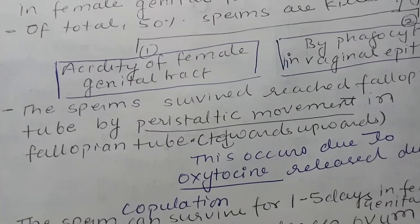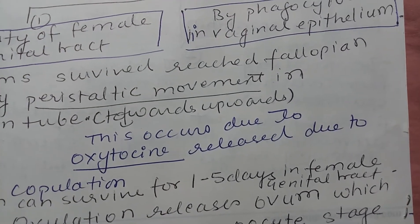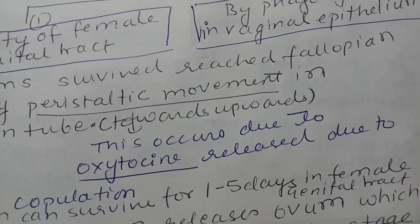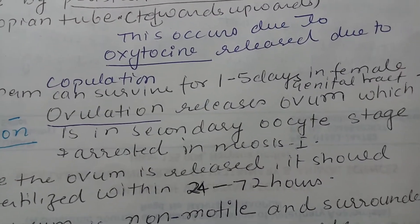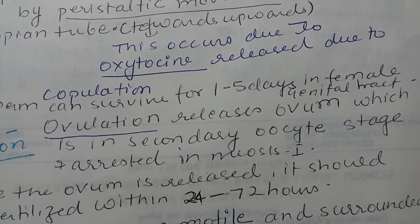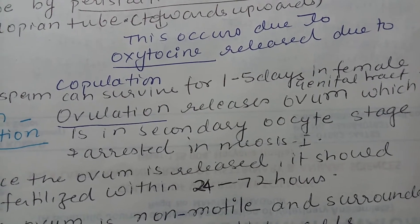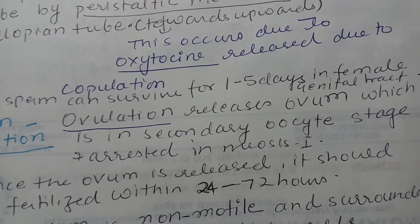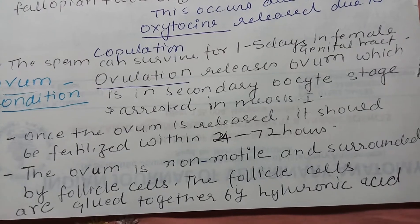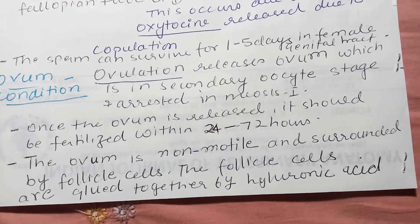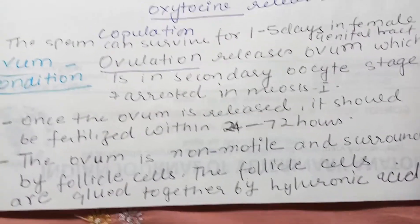The sperm has a tail so it can show movement. The sperm can survive for one to five days in the female genital tract. Now, ovulation is the process that releases the ovum in the secondary oocyte stage. The secondary oocyte stage, as you know, is arrested in meiosis one. Once the ovum is released, it should be fertilized within 24 to 72 hours.